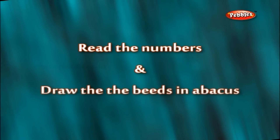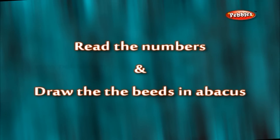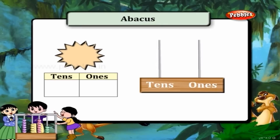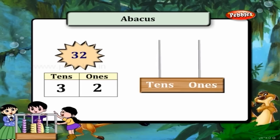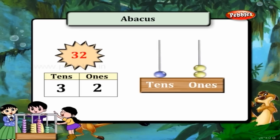Read the numbers and draw the beads in the abacus. 32 is 2 ones and 3 tens. So draw 2 beads on the ones line and 3 beads on the tens line.